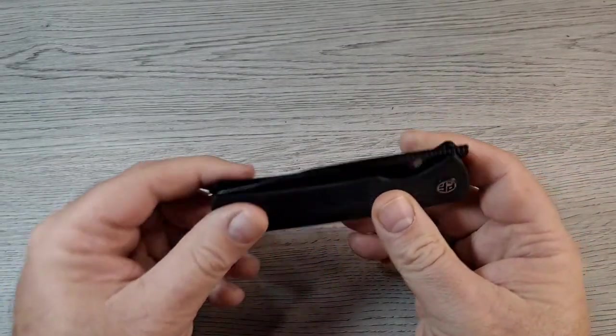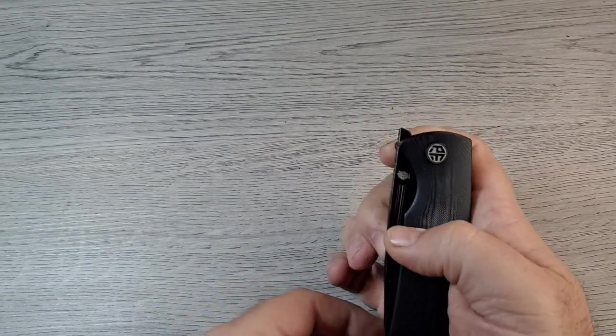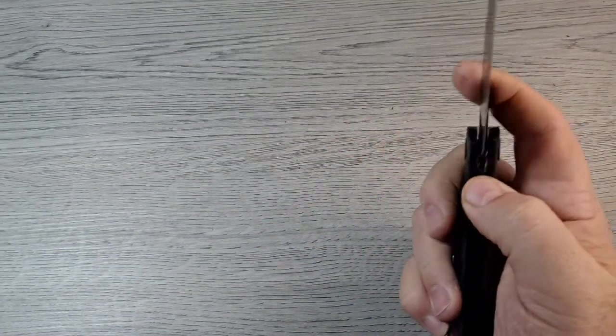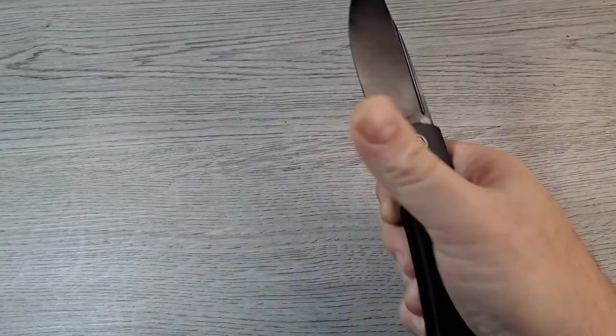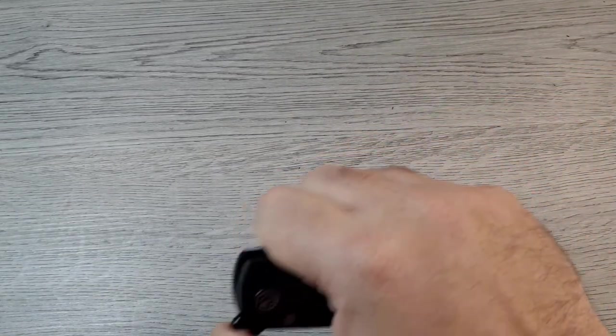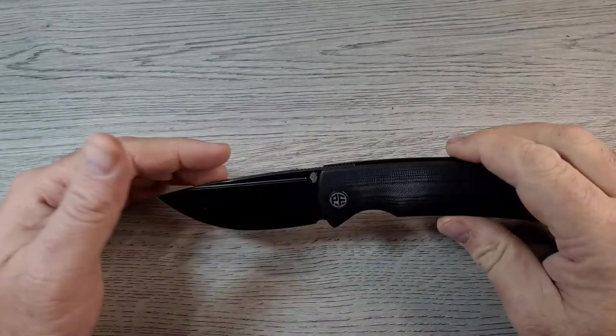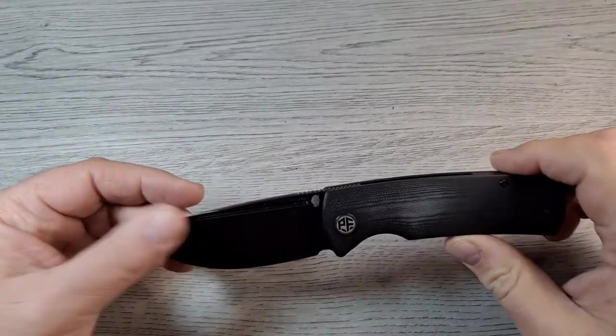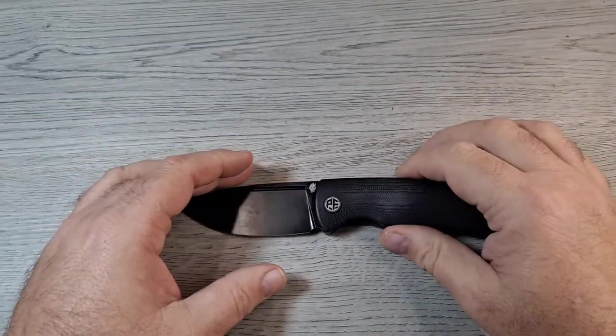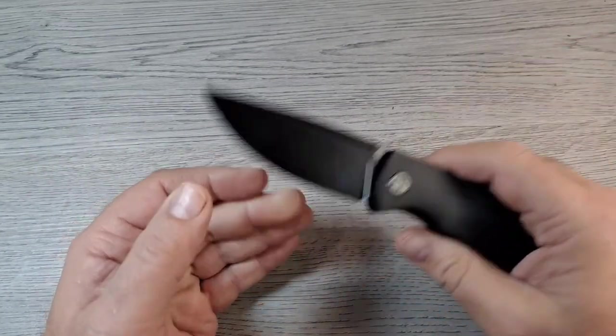You also have this fuller on both sides that you're supposed to be able to Spidey flick. Yeah, I can Spidey flick this. Thumb open? Oh yeah, that is ridiculous. This thing is ridiculously smooth. These are listed at $46.99, you can't beat that. I used a discount code from another YouTube channel, so I got this for $42.29, less than 43 bucks.